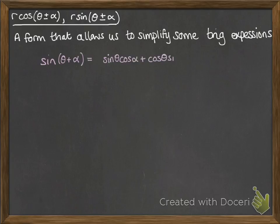So here we have, we know that sine theta plus alpha is equal to sine theta cos alpha plus cos theta sine alpha, and then if we put the r in front of it, it would just mean multiplying the whole thing by r. So we get this expression.